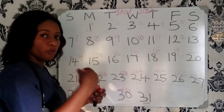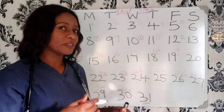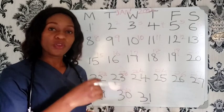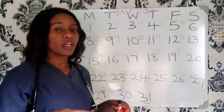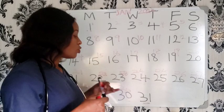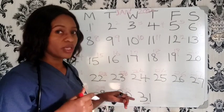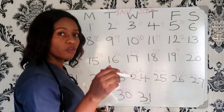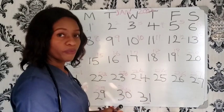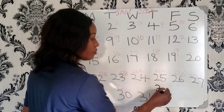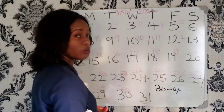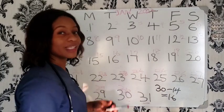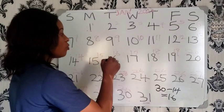Now remember that ovulation takes place 14 days before the next menstrual period. The way the menstrual cycle varies from woman to woman is the same way ovulation varies. For this woman with a 30-day cycle, she will ovulate on day 16, because you subtract 14 from 30, giving you 16. So on day 16, she will ovulate.